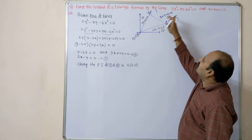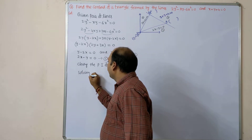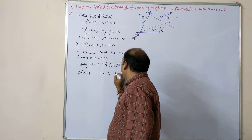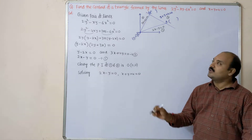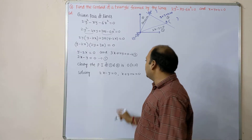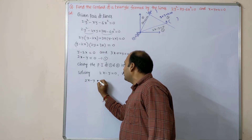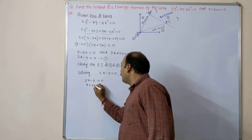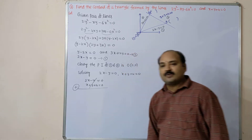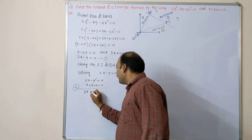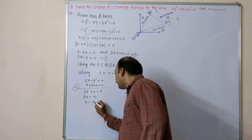Next, solving equations 1 and 3 gives point A; solving equations 2 and 3 gives point B. Solving 2x - y = 0 and x + y + 4 = 0: adding these two equations, y and -y get cancelled, giving 3x + 4 = 0, so x = -4/3.